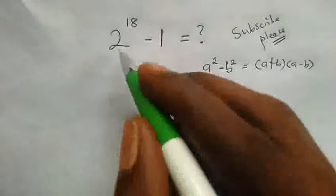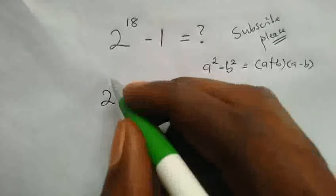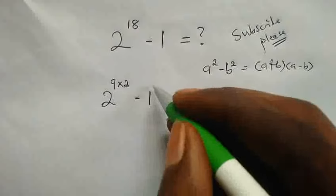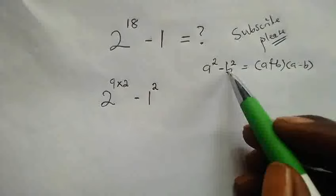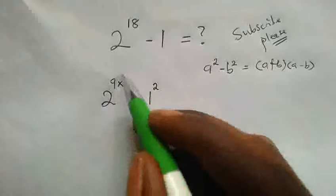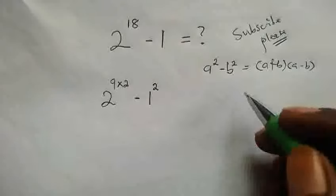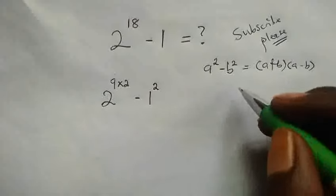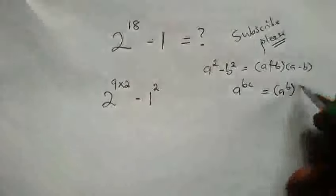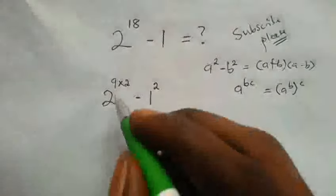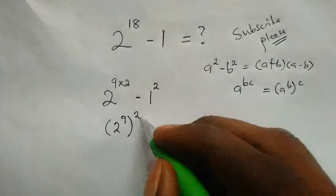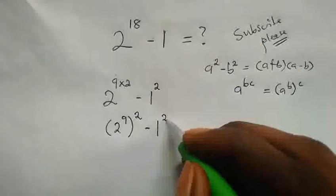Now let us try to manipulate this expression to have bases with powers of 2. Let us write 2 raised by 18 as 2 raised by 9 times 2, then minus 1. 1 is the same as 1 squared. We can see that the base here has a power of 2 and the base here 1 has a power of 2. We recall this algebraic property: a raised by b times c is the same as a raised by b in bracket raised by c. So right over here, we're going to have in bracket 2 raised by 9, close bracket raised by 2, then minus 1 squared.